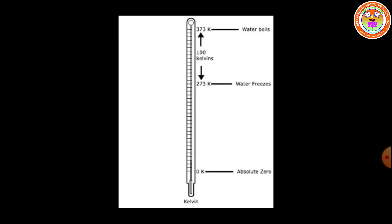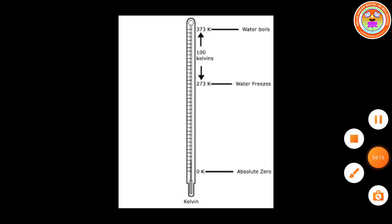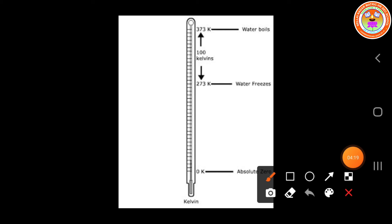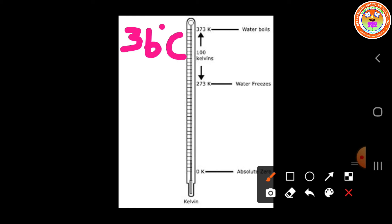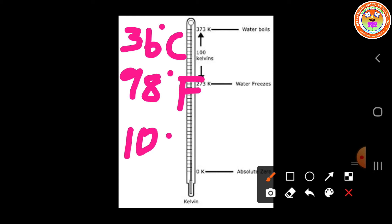We are using three kinds of units in the temperature scales, that is in the thermometer scales: degree Celsius, degree Fahrenheit, and Kelvin. The degree symbol we have to use for Fahrenheit as well as Celsius, but the degree symbol we should not use for Kelvin. For example, consider a temperature reading of 36 degree Celsius, 98 degree F, and 100 Kelvin.